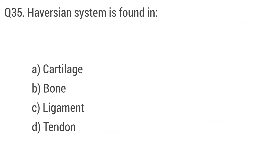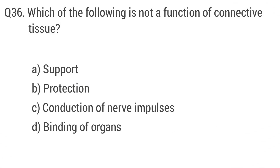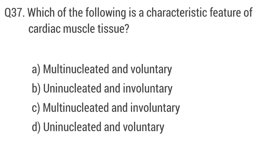Question 35: Haversian system is found in? The right answer is option B: bone. Question 36: Which of the following is not a function of connective tissue? The right answer is option C: conduction of nerve impulse.